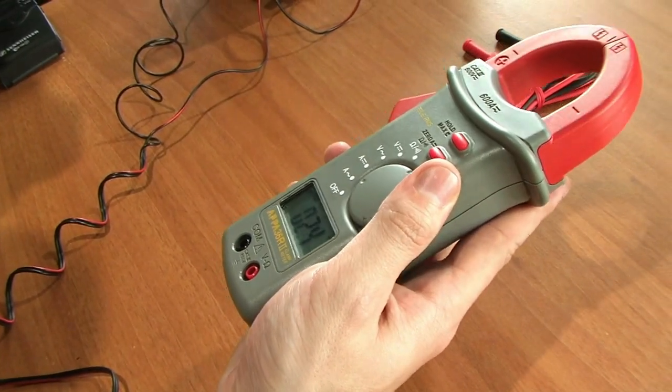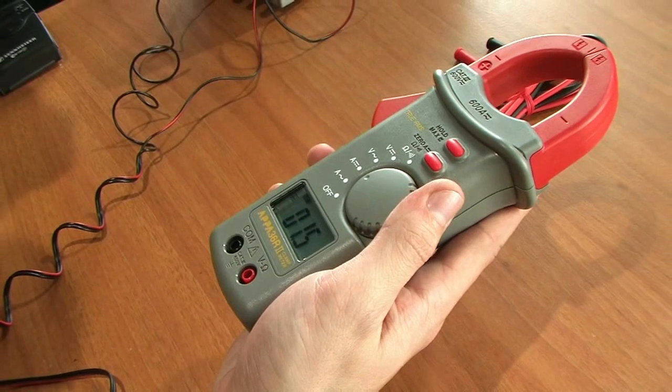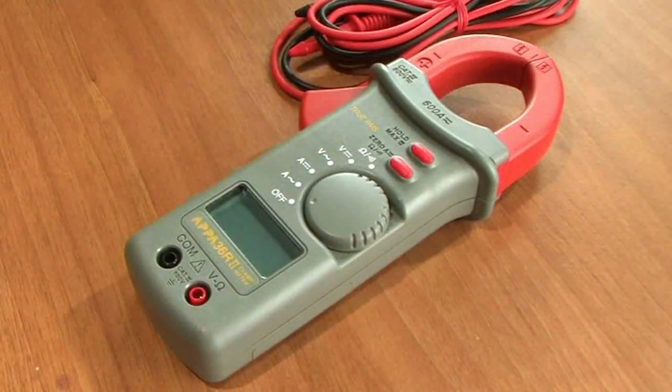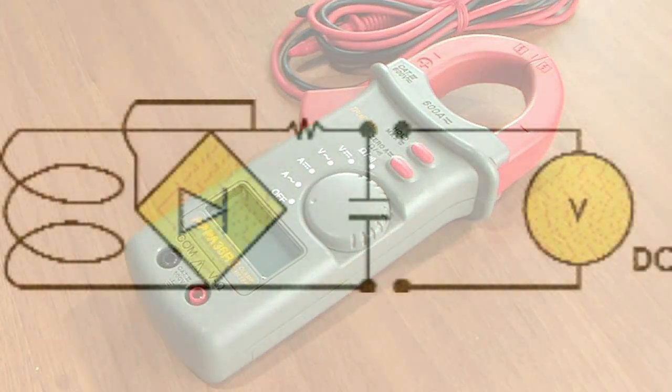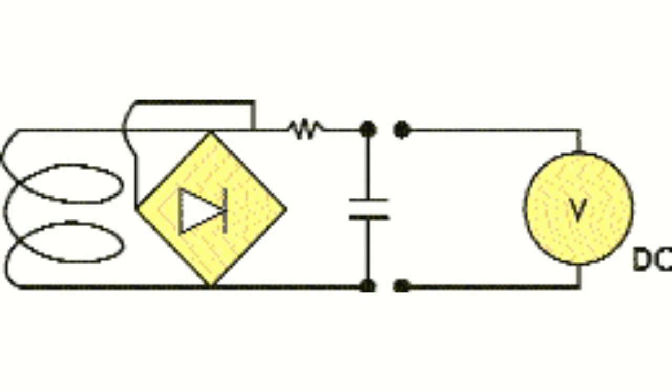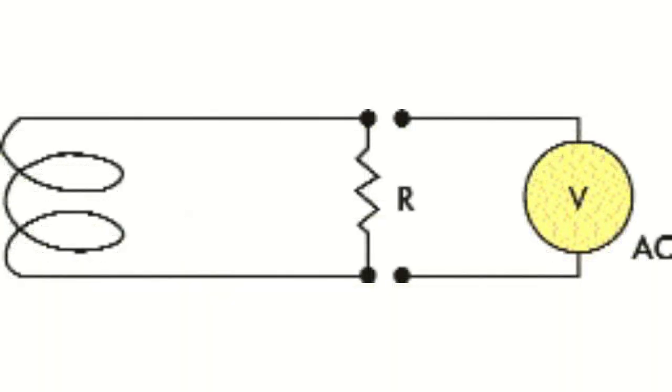One of the most important characteristics of measurement is versatility and ability to measure several physical quantities. APP A36R2 clamp meter is exactly one of the universal instruments. This device allows to measure strength of alternating and direct current, value of direct and alternating voltage.